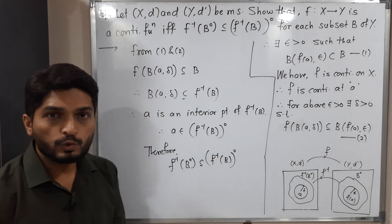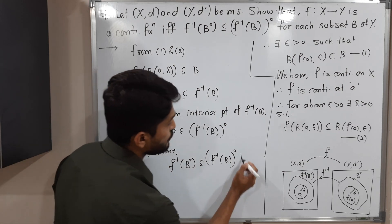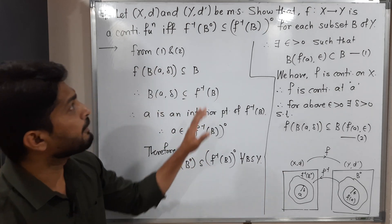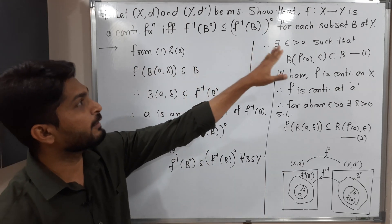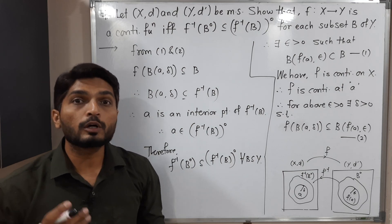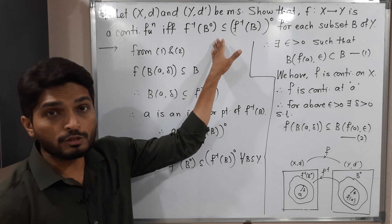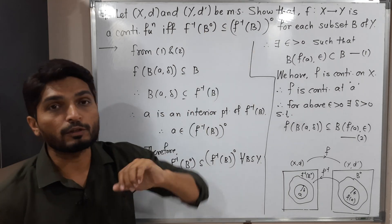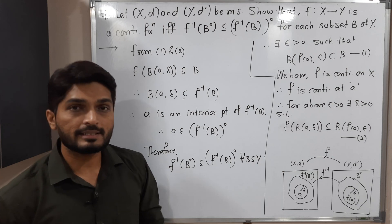We had taken point a from f⁻¹(B°) and proved that a is in (f⁻¹(B))°. Therefore f⁻¹(B°) ⊆ (f⁻¹(B))°, and since B is any arbitrary subset of Y, this relation holds for every subset B of Y. So we have proved the forward direction. Now we have to prove the converse part.